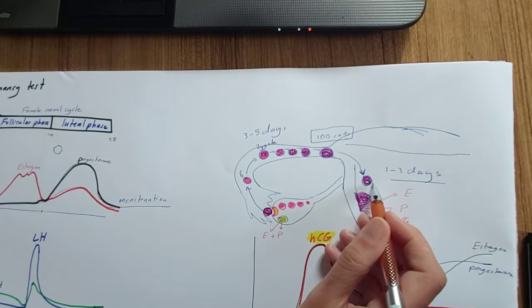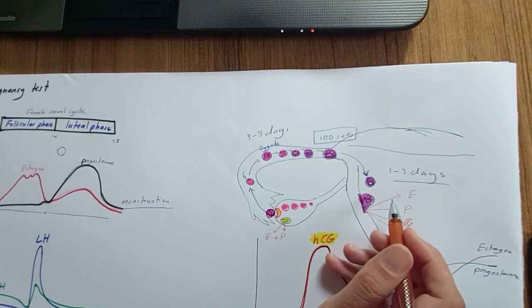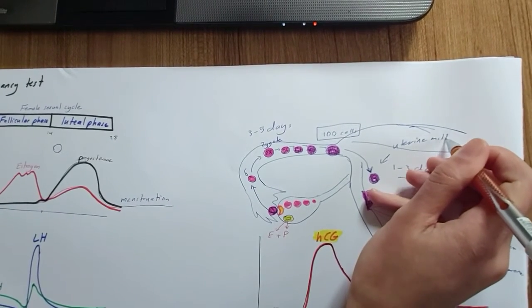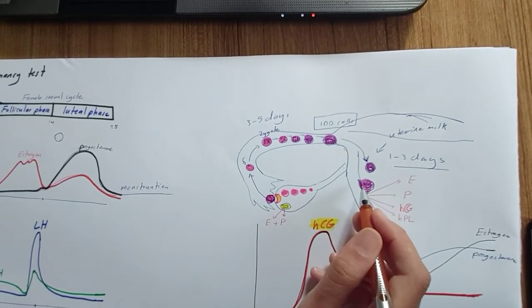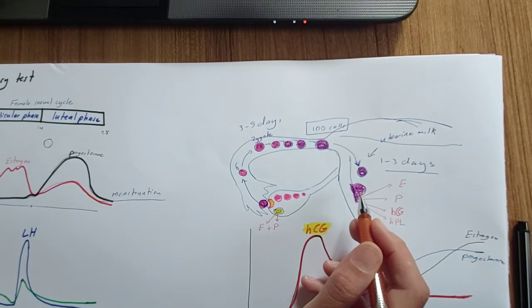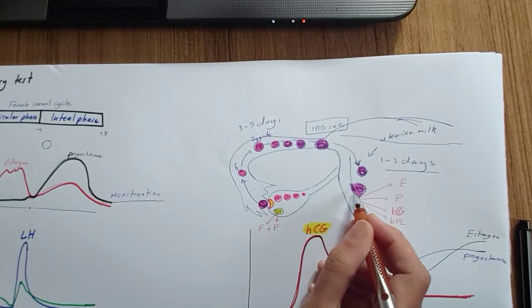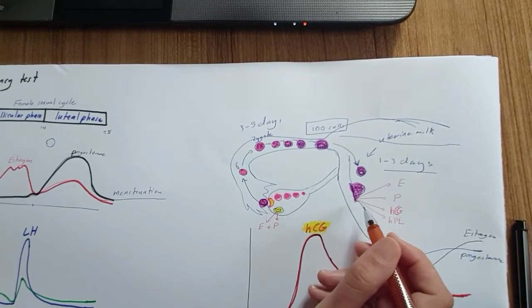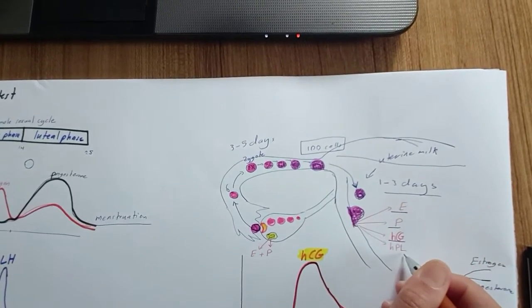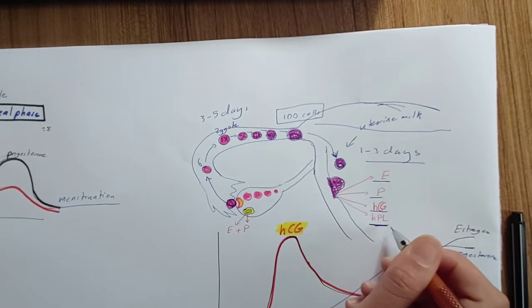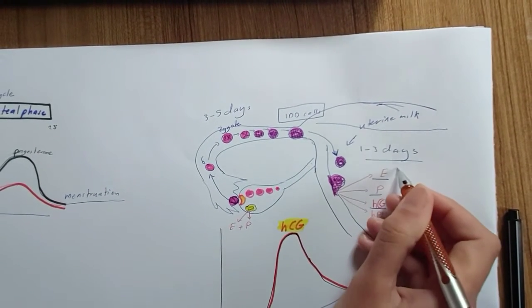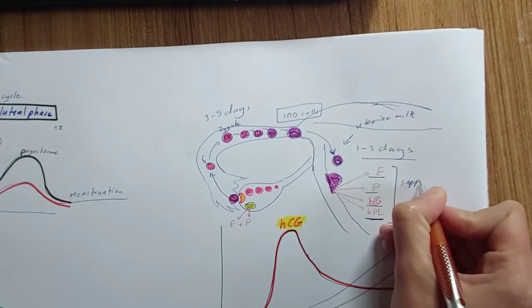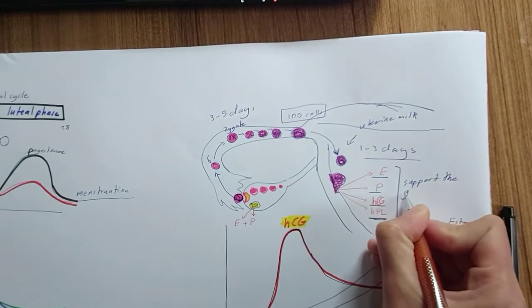Before implantation, the blastocyst obtains nutrition from the uterine endometrial secretion called uterine milk. After implantation — around five to seven days after ovulation — the placenta is responsible for nutrition of the zygote from the mother's body. The placenta starts secreting several hormones including estrogen, progesterone, human chorionic gonadotropin (HCG), and human placental lactogen (also called human chorionic somatomammotropin). These placental hormones support the growth of the developing embryo.